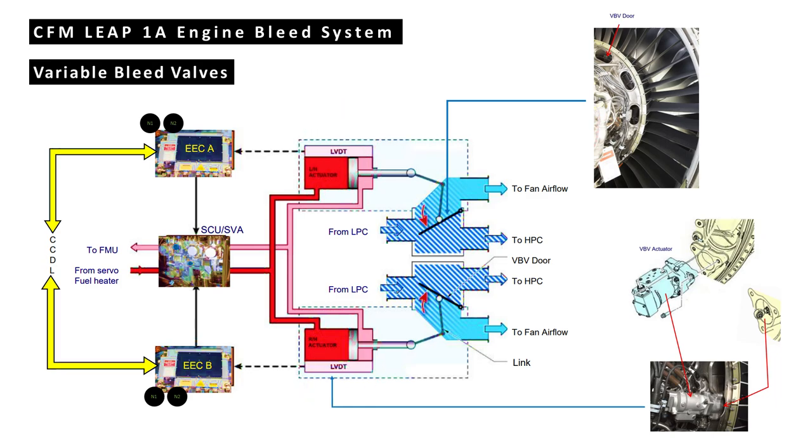The actuators push on the actuating ring which operates the eight VBV doors through operating rods. The VBV doors intrude into the primary airflow and let some air out into the fan airflow through VBV ducts.